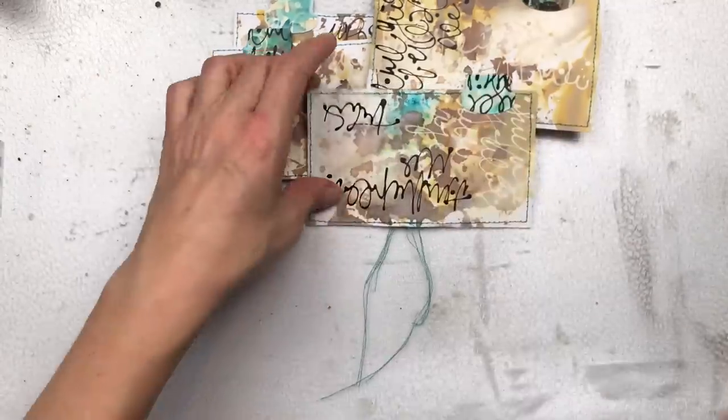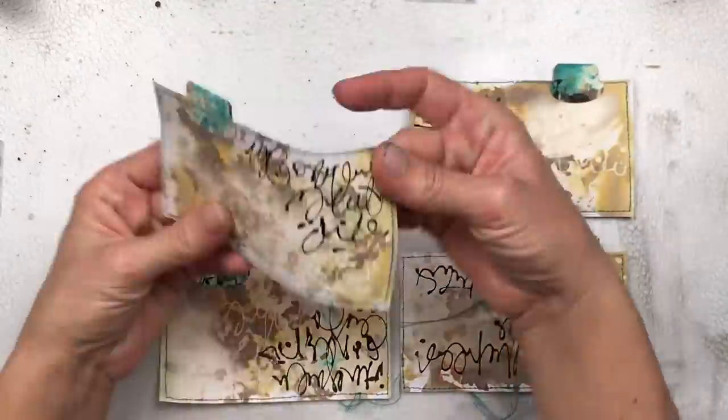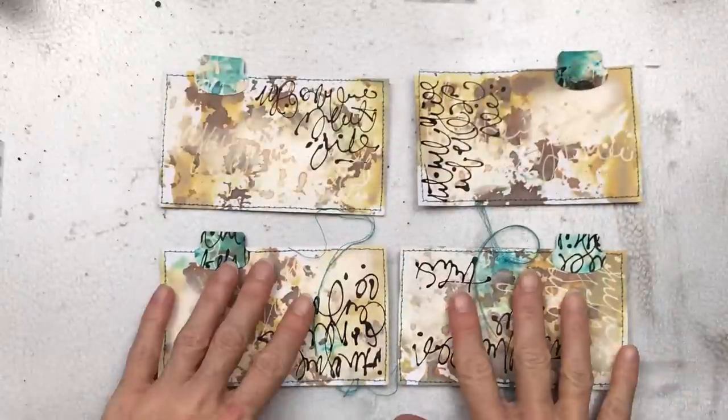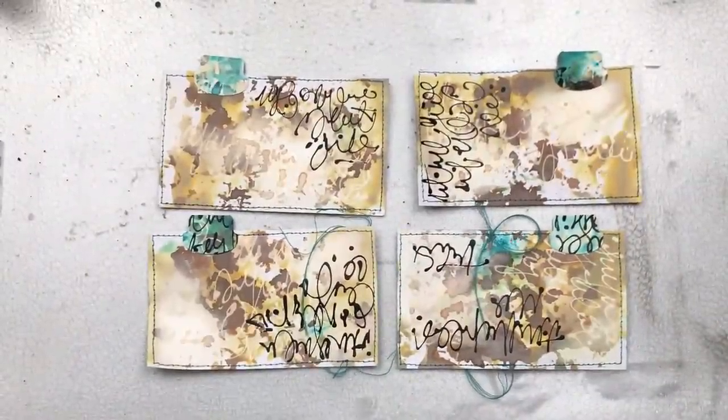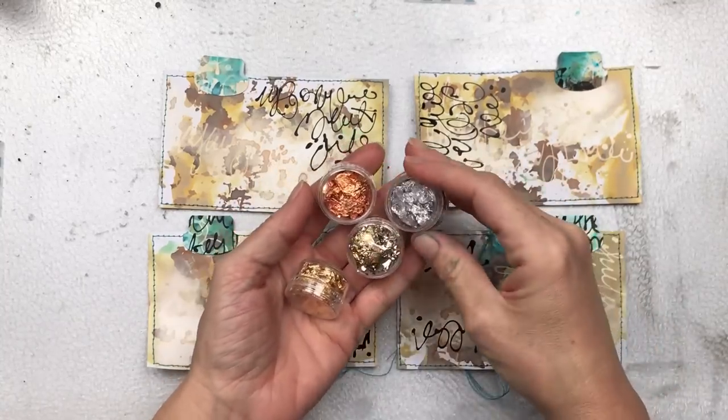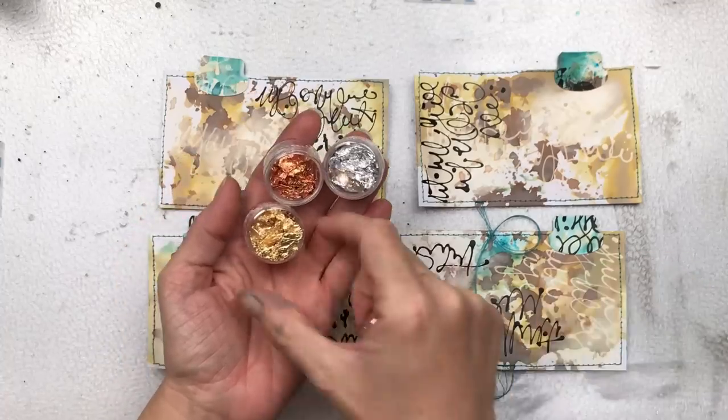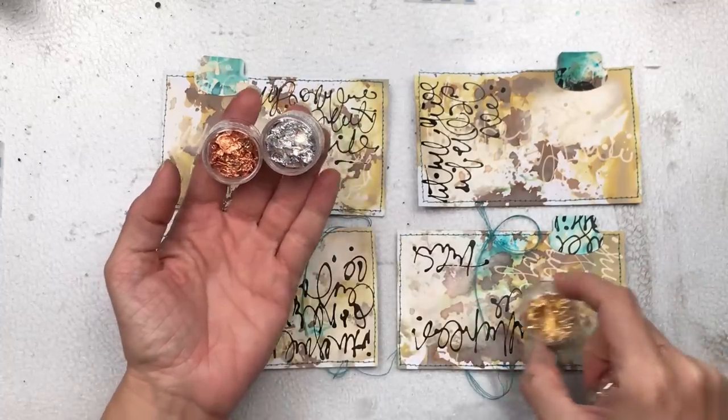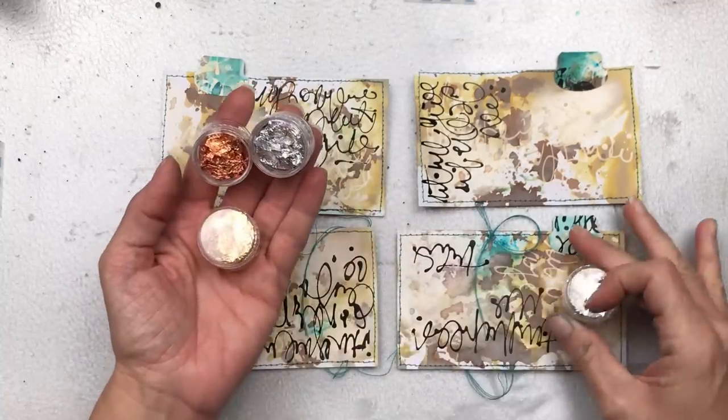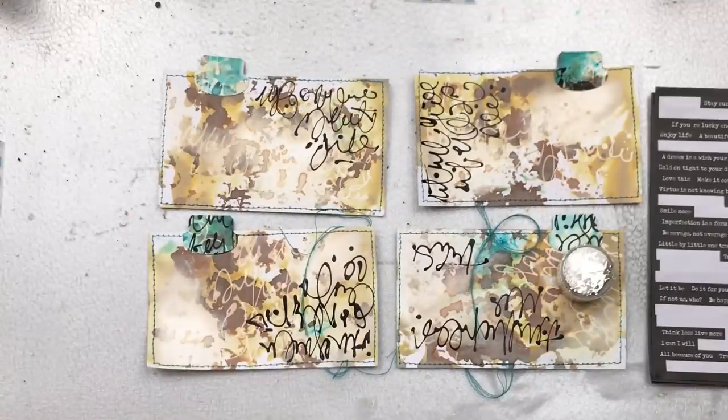I thought about adding some kind of a focal point like a butterfly or maybe a flower, but then I thought it will detract from the scribbles, which I think can be the focal point. What I am going to add there is a little bit of bling. I have these little tubs of gold leaf—they come in four different colors: silver, copper, light gold, and yellow gold. I got these from Kmart here in Australia in the craft section. So I'm going to add a little bit of the lighter gold just to give it a little bit of zhuzh.